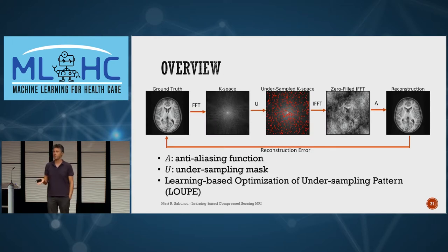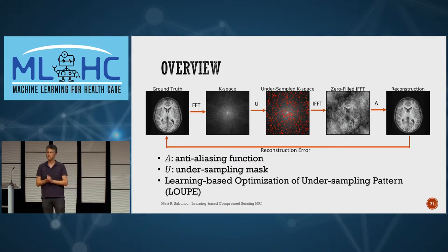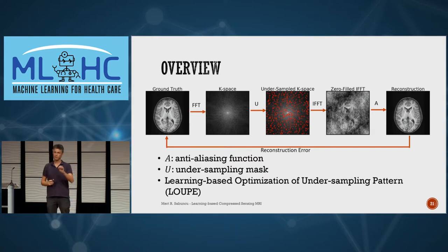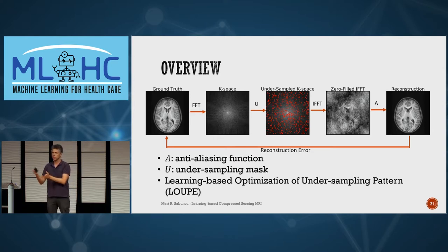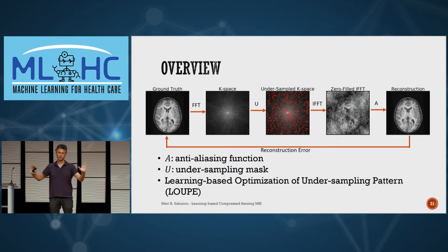The overview of our pipeline is straightforward. We call our method LOOP — Learning-based Optimization of the Undersampling Pattern. You provide fully sampled ground-truth MRI scans, take them to Fourier domain, apply a candidate undersampling mask, zero-fill unsampled locations, take the inverse Fourier transform to get an aliased/noisy image, then pass it through an anti-aliasing filter A — the amortized optimization reconstruction network — to produce a clean MRI scan. The whole process minimizes discrepancy between reconstruction and ground truth.